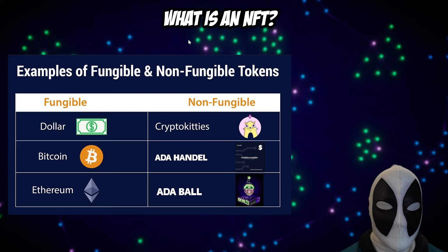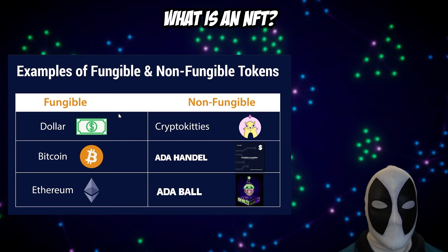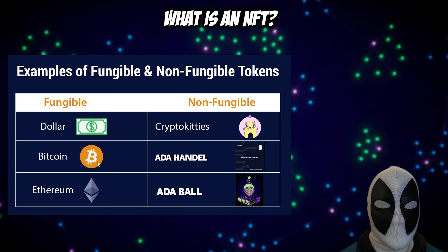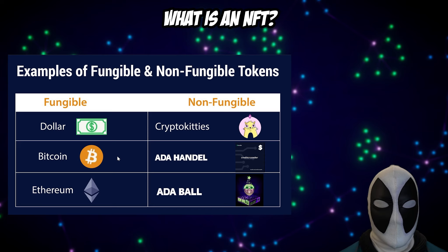NFT stands for non-fungible token. The difference between a non-fungible token and a fungible token is that a fungible token can have more than one that are exactly the same. A good example is a digital dollar, Bitcoin, or Ethereum — one Bitcoin is the same as another Bitcoin. The only difference is the amount someone has. They don't have unique asset IDs, whereas non-fungible tokens are each unique — there's only one of any non-fungible token.